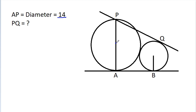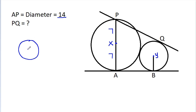Suppose X and Y are the centers of the circles. Then AX will be 7 and PX will be 7. In any circle, the radius and tangent are perpendicular to each other. So this angle will be 90 degrees and this angle will be 90 degrees.